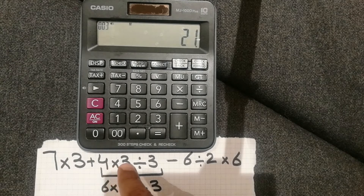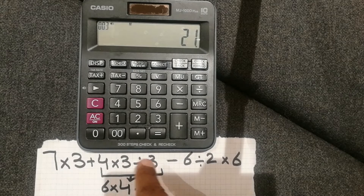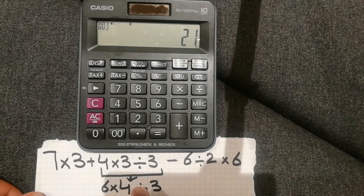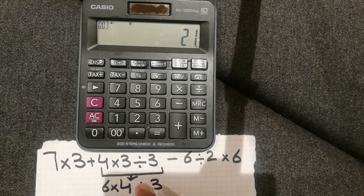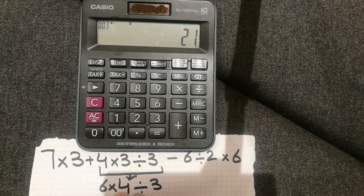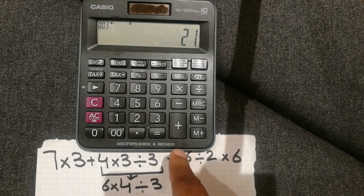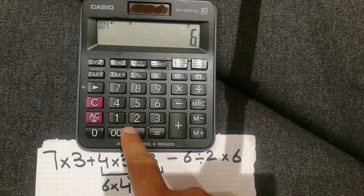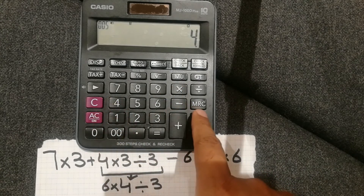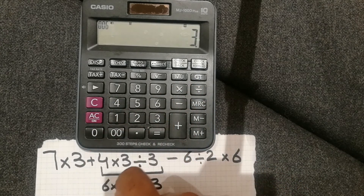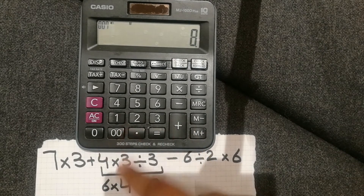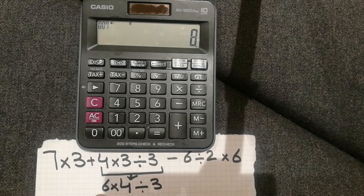The next step — you can see I want to do 4 multiplied by 3 divided by 3. But mistakenly, for example, I do 6 multiplied by 4 divided by 3, and then I press the M plus button because it is with a plus. So you can see I made a mistake — I don't want to do this equation but I did it mistakenly.